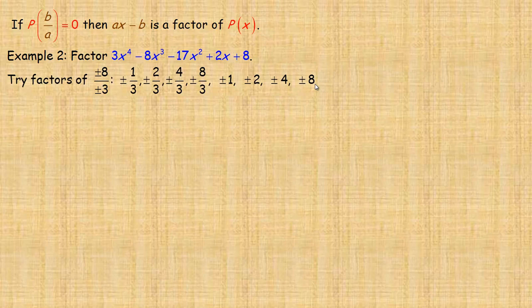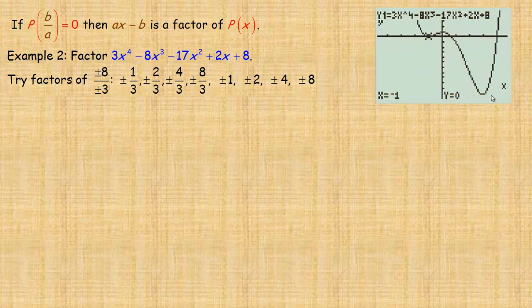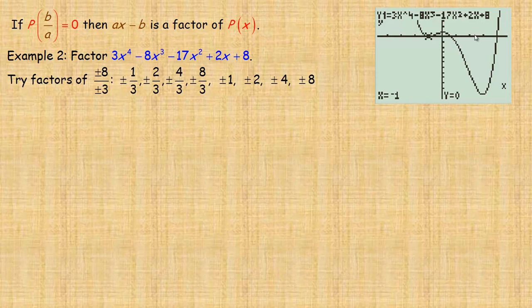A way to speed this up: if you have graphing technology — a computer or handheld graphing calculator — the x-intercepts are the numbers that should work, so you don't have to try all 16 values. Notice the root at negative 1: when the graph comes down and touches but doesn't cross, that implies a double root. There should be another root between 0 and 1, closer to 1, and one at 4.